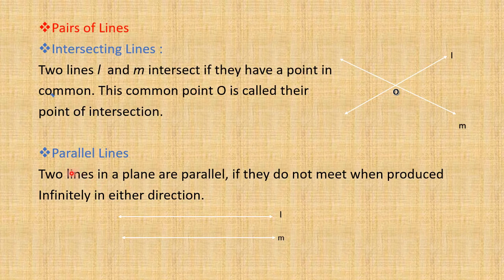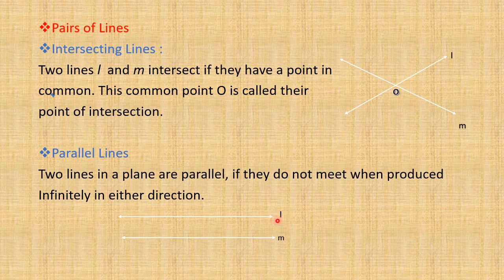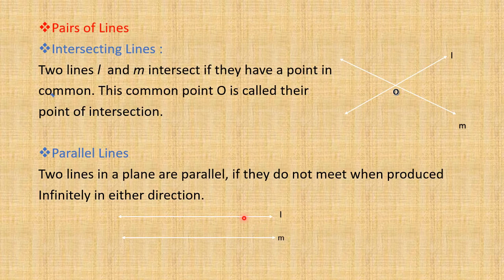Next we have parallel lines. Two lines in a plane are parallel if they do not meet when produced infinitely in either direction. You can see line L and line M — they do not intersect as in the previous diagram. If you elongate this line to the right side or left side, they are still not going to intersect. Such lines are said to be parallel lines.